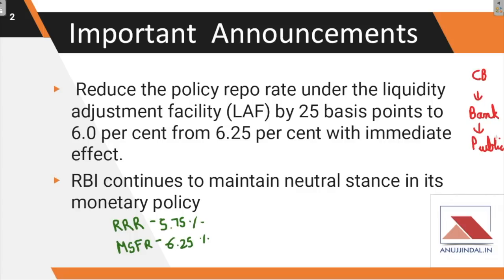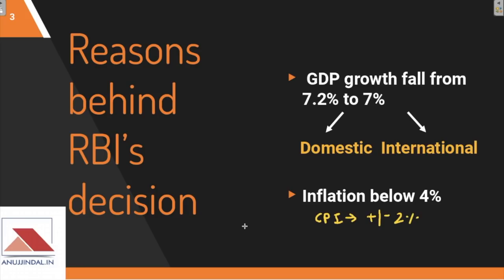There is also another important announcement: RBI continues to maintain a neutral stance in its monetary policy. RBI has clearly stated it will not change that stance, as speculated by many newspaper experts and journalists. Other key figures to know: the reverse repo rate has been fixed at 5.75 percent and the Marginal Standing Facility rate is 6.25 percent.